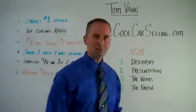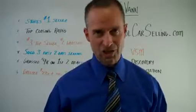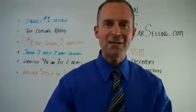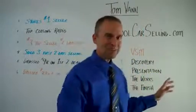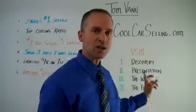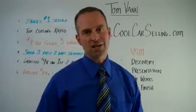Now, the system is called VSM. That stands for Velocity Selling Methodology. You won't have to remember that for today. I just want you to call it VSM. It's easier. So it's broken down into four different phases, and those phases are discovery, presentation, the works, and the finish. Just four phases. Four phases is all you need to turn out to be the most extraordinary salesperson that you ever imagined you could be.